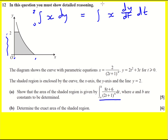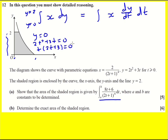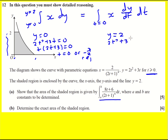I'm going to figure out the new limits first. When y equals zero, two t squared plus three t equals zero, so t(2t + 3) = 0, giving t = 0 or t = −3/2. Since t is greater or equal to zero, we reject the negative value, so the bottom limit is t = 0.